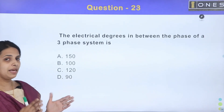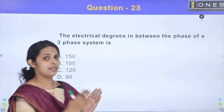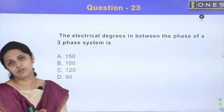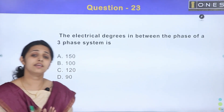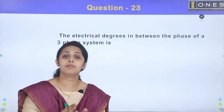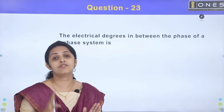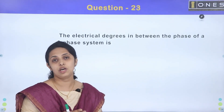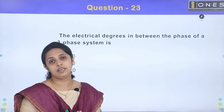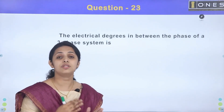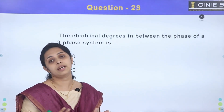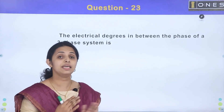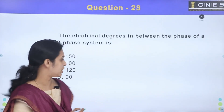In a three-phase system, there are three phases — R-phase, Y-phase, and B-phase. Between each phase there are 120 electrical degrees of phase shift.